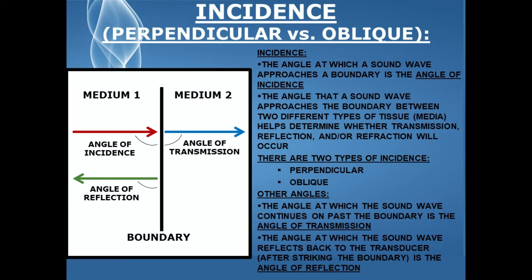Let's start out by defining incidence. The angle at which a sound wave approaches a boundary is the angle of incidence. The angle that a sound wave approaches the boundary between two different types of tissue, also known as media, helps determine whether transmission, reflection, and or refraction will occur.